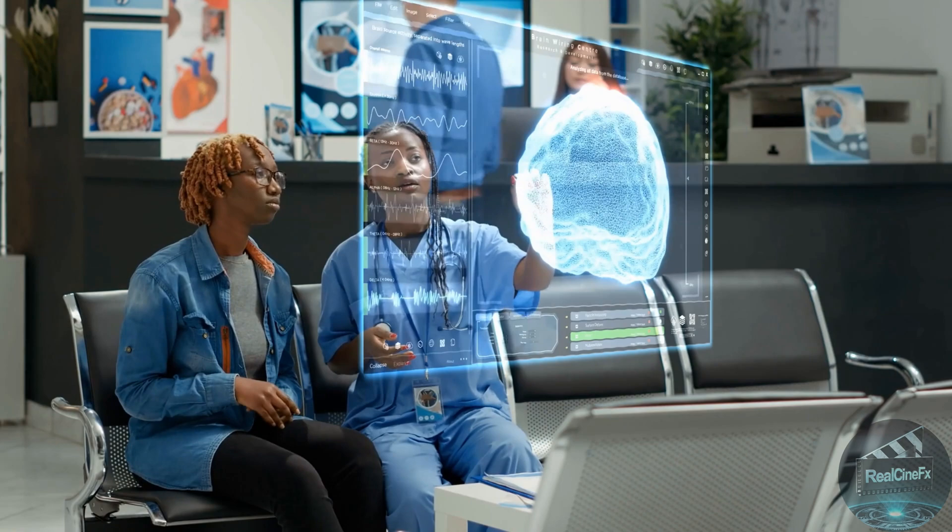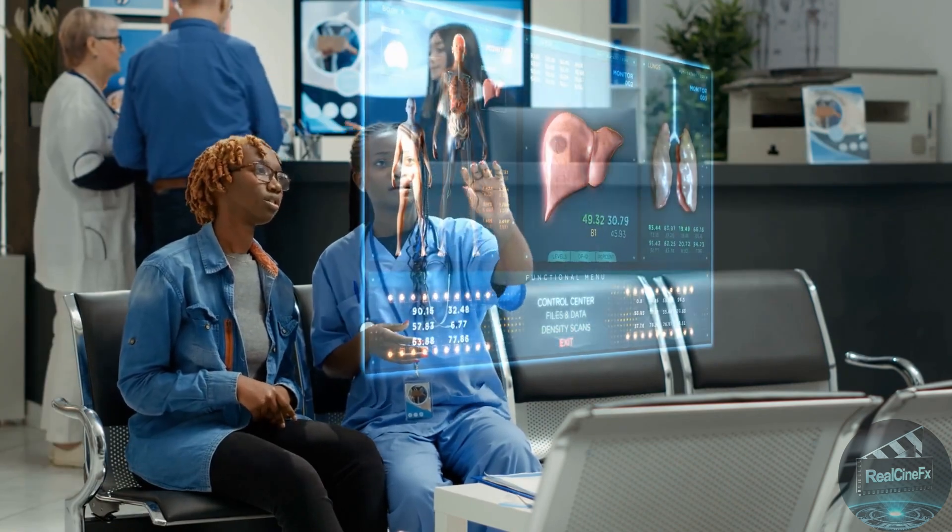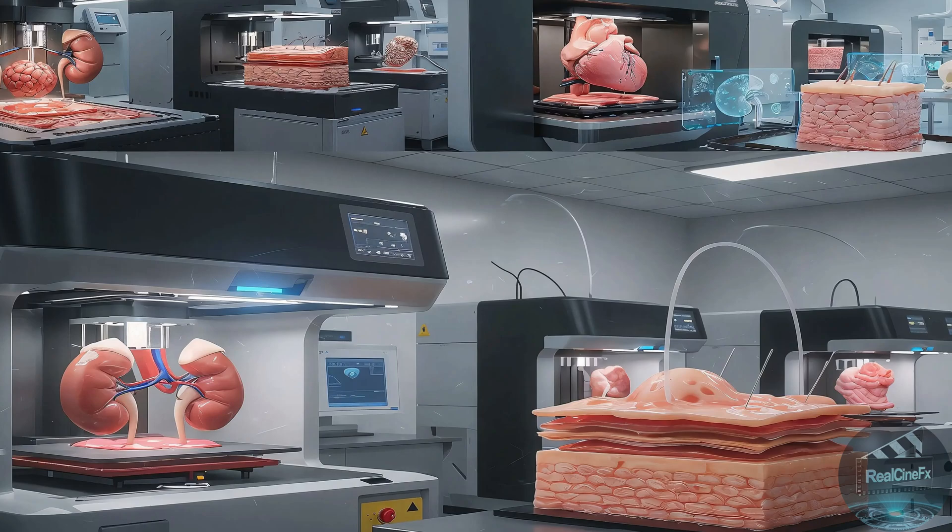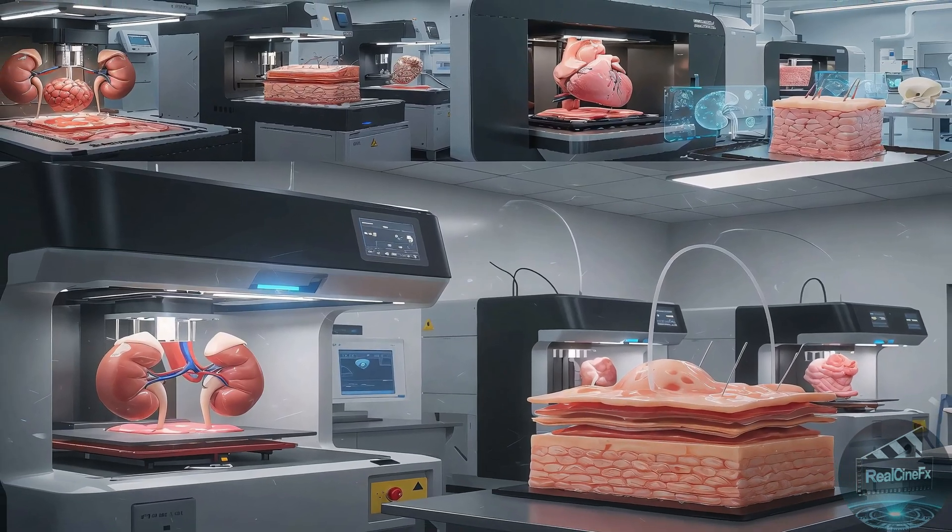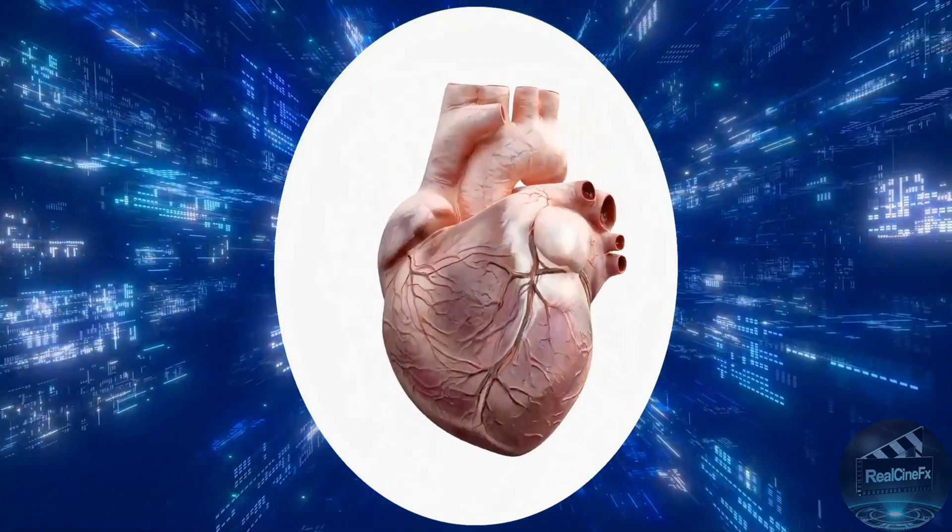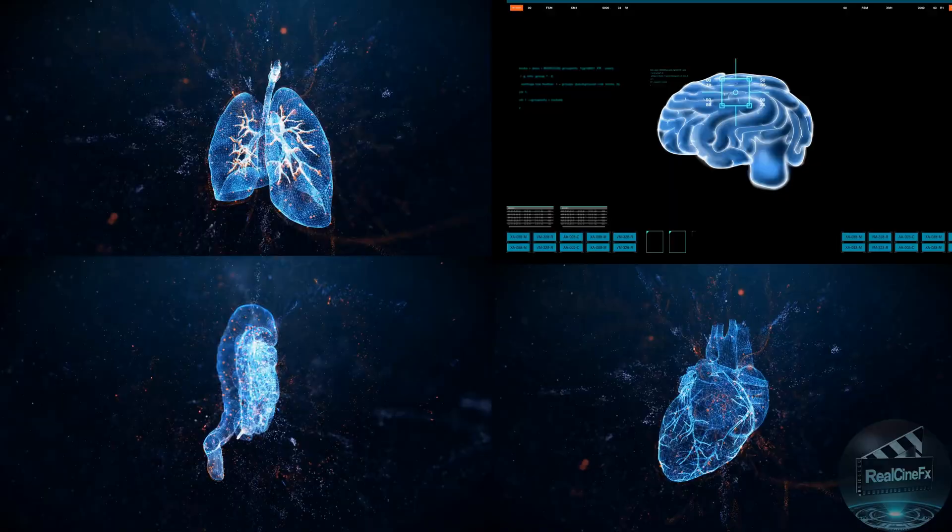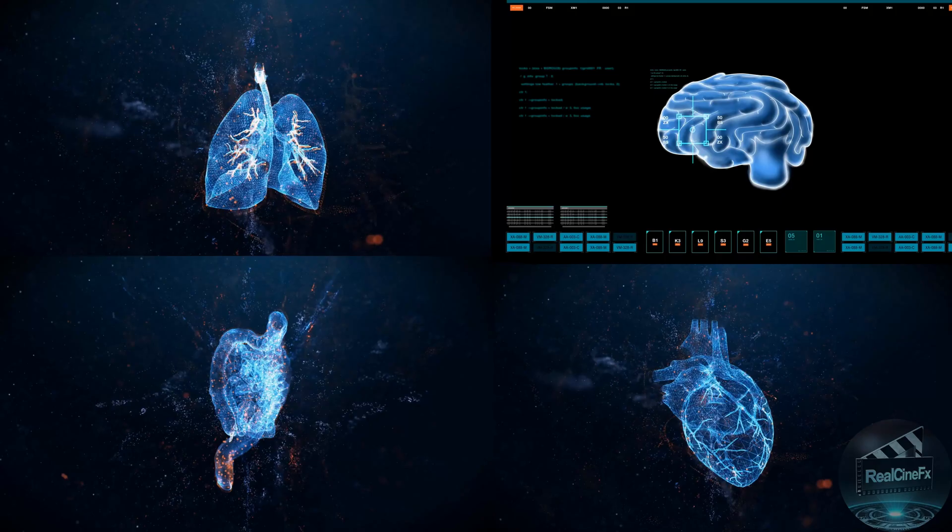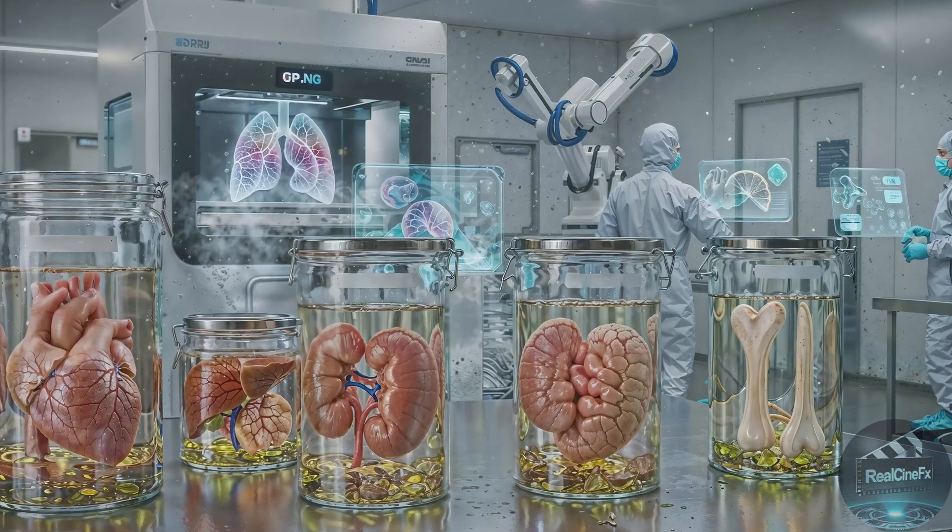Today, scientists can replace body parts using 3D-printed organs. Right now, we are in the early stages. In 2019, a team at Tel Aviv University made a tiny beating heart using real human cells. Companies like 3D Bio and United Therapeutics are now working on printing livers and kidneys.